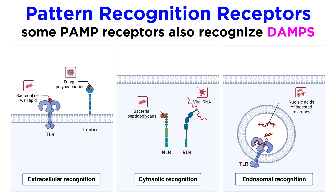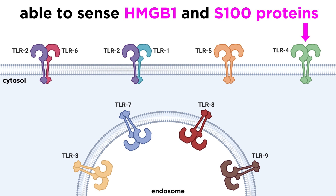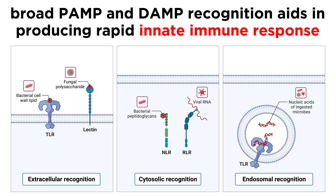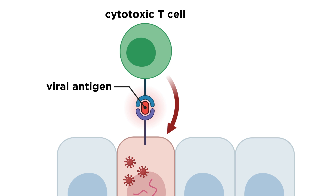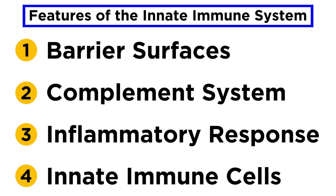Interestingly, many of the PRRs we've already discussed can also recognize DAMPs. For example, TLR4 can also sense HMGB1, the S100 proteins, and many other DAMPs. The broad range of PAMP and DAMP recognition is one of the features that allows the innate immune system to respond quickly to threats. Later on, when we talk about the adaptive immune system, we'll learn about the benefits of antigen-specific responses. But for now, let's continue learning about the innate immune system.